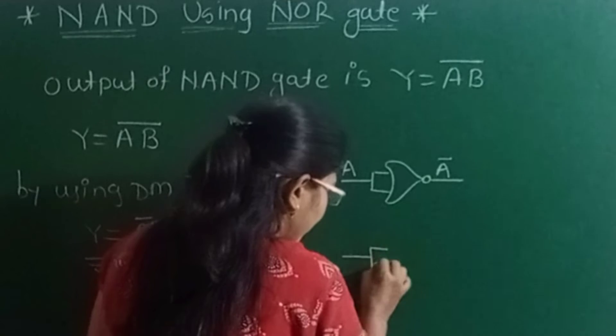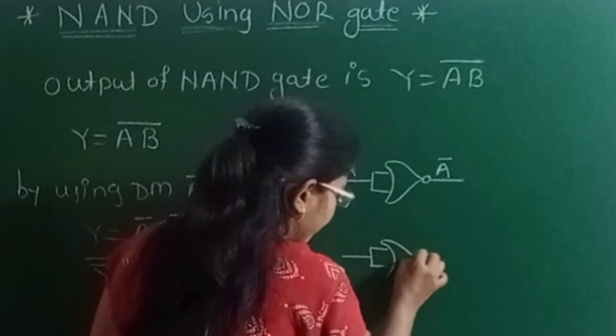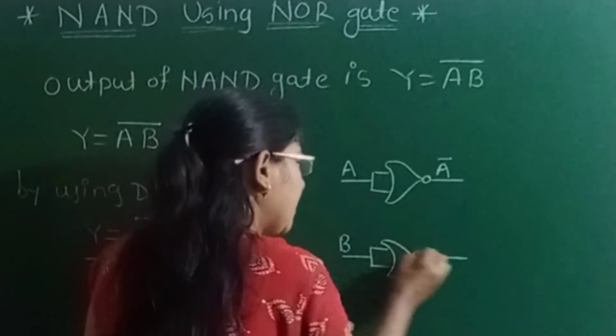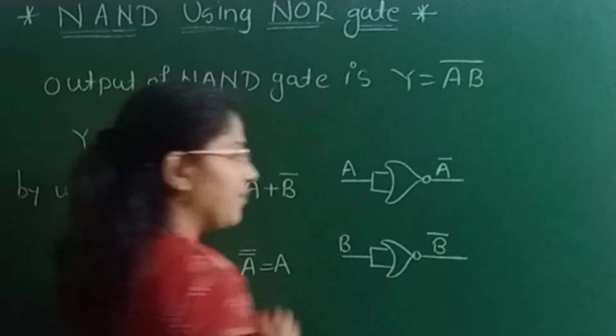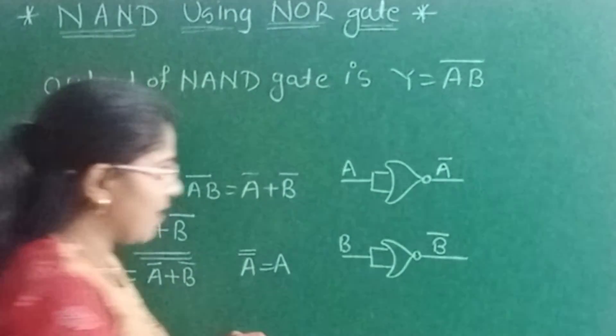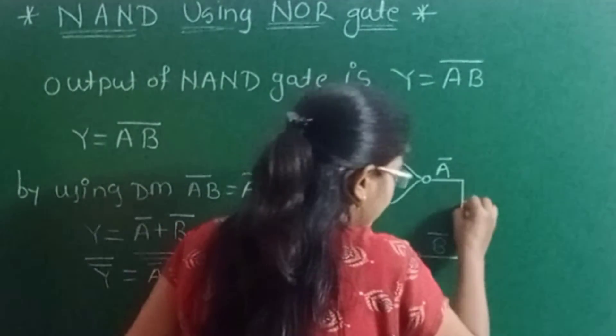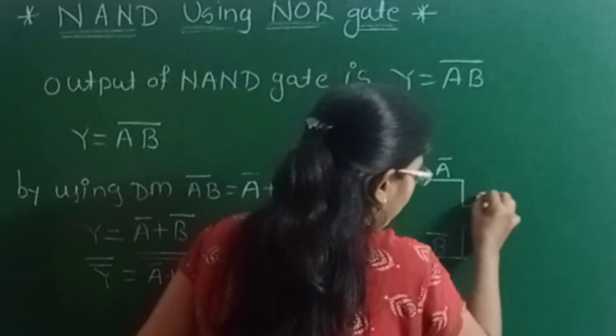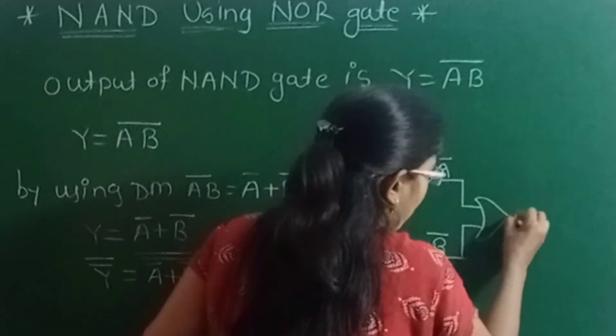Now use one more NOR gate which will again act as the inverter. Its input is B, its output will be B bar.